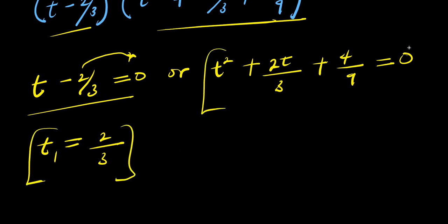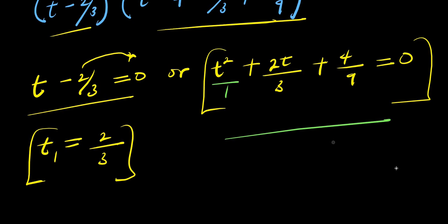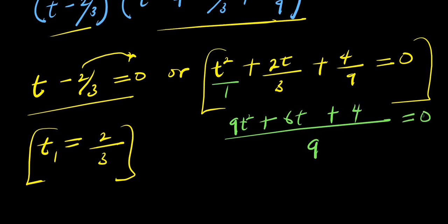Now we have this other equation, which we are going to solve for other values of t. This is over 1, so let's find the common LCM, which is 9. 9 divided by 1 is 9, times t squared, that is 9t squared. Plus 9 divided by 3 is 3, times 2t, that is 6t. Plus 9 divided by 9 is 1, times 4, I have 4. And this equals 0.